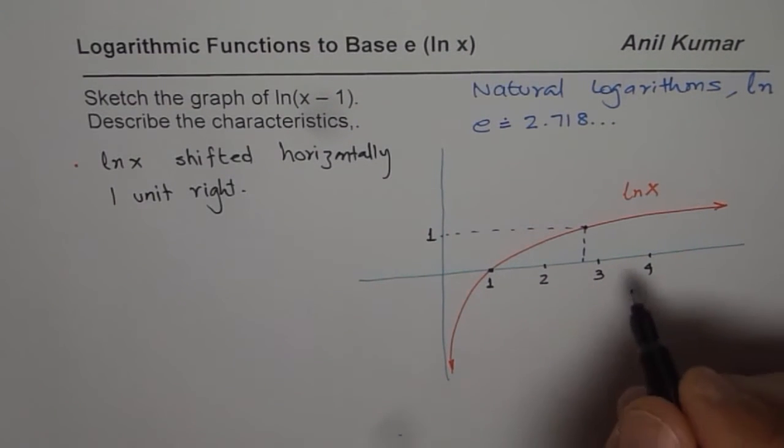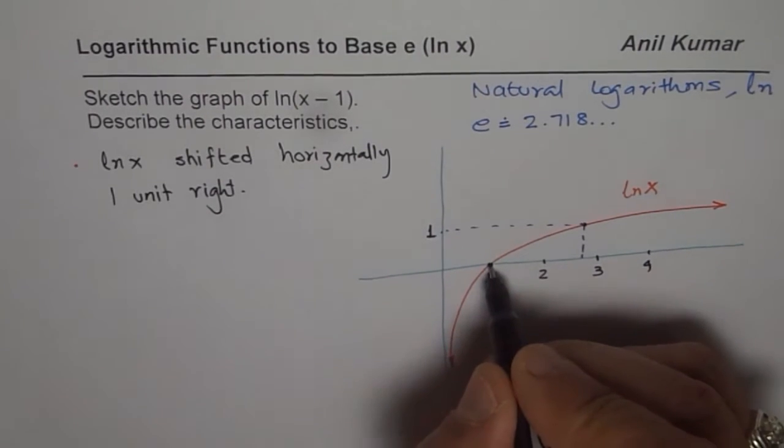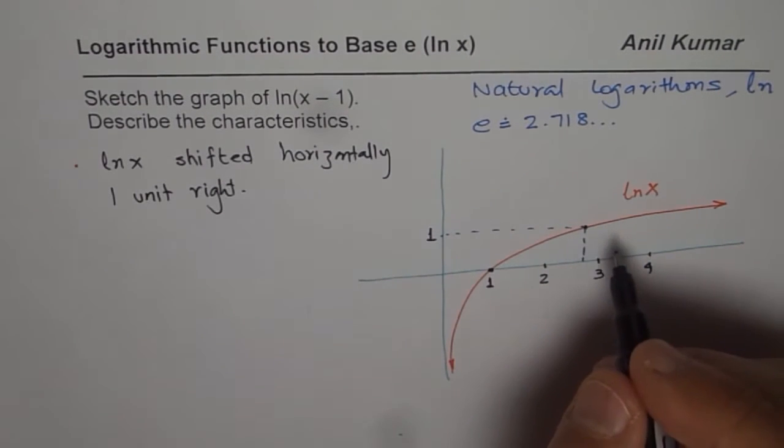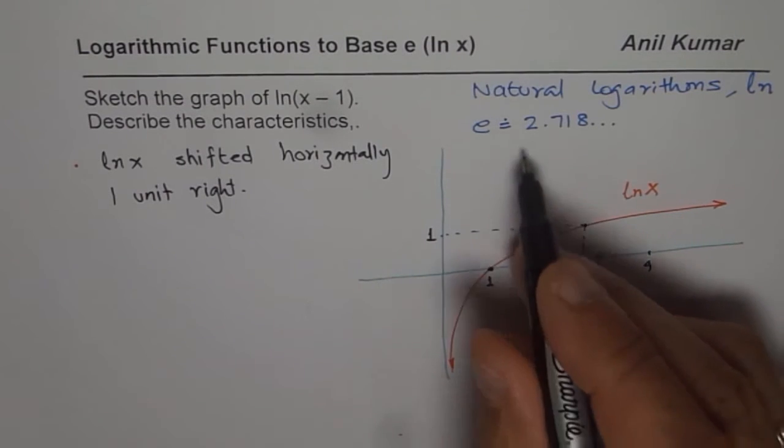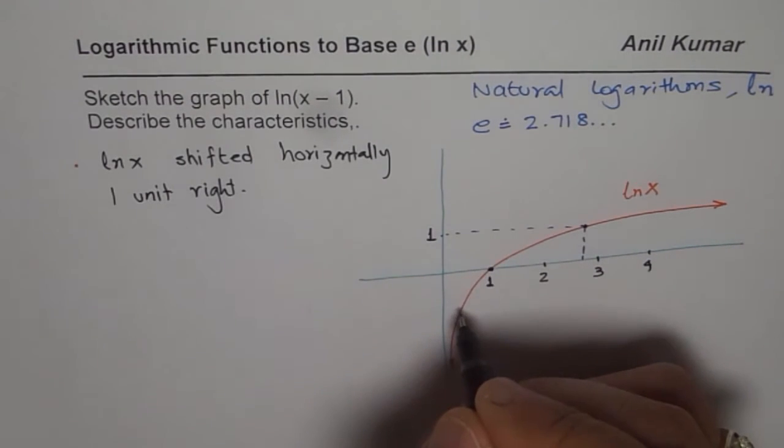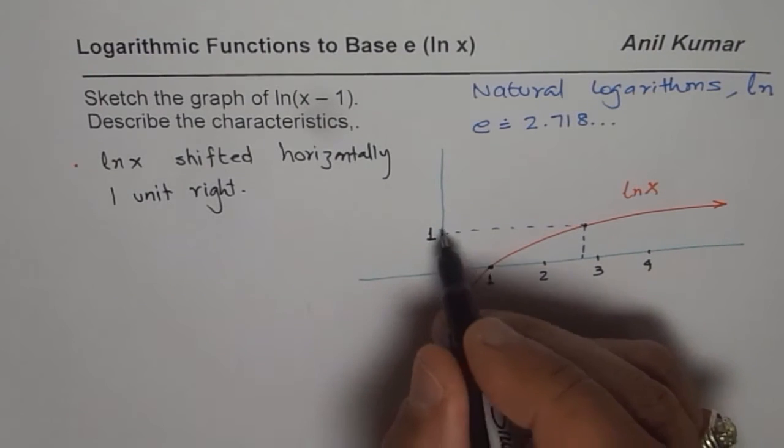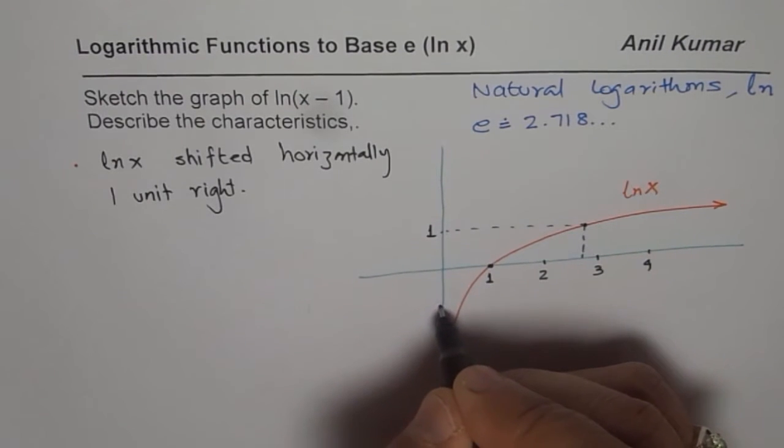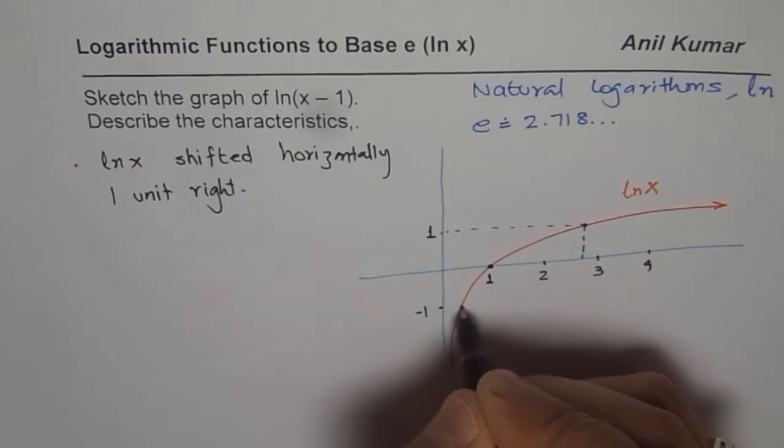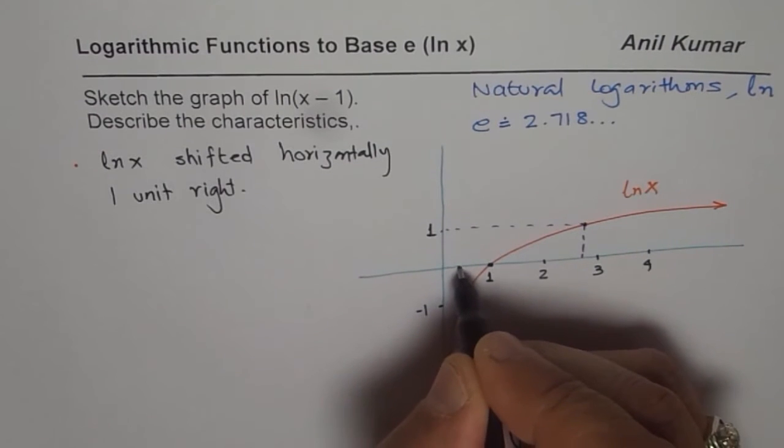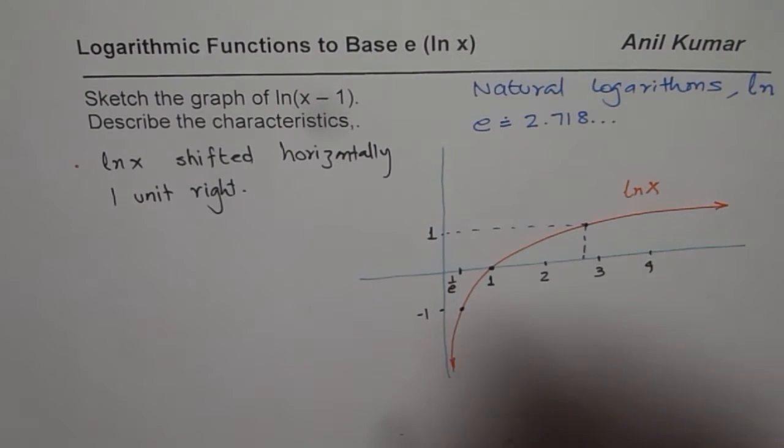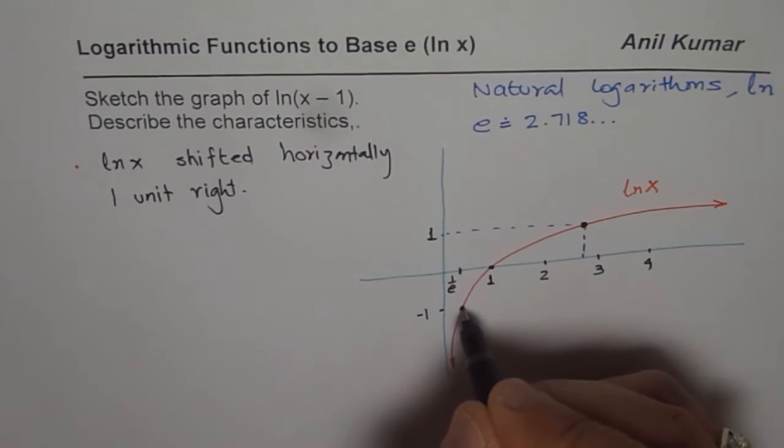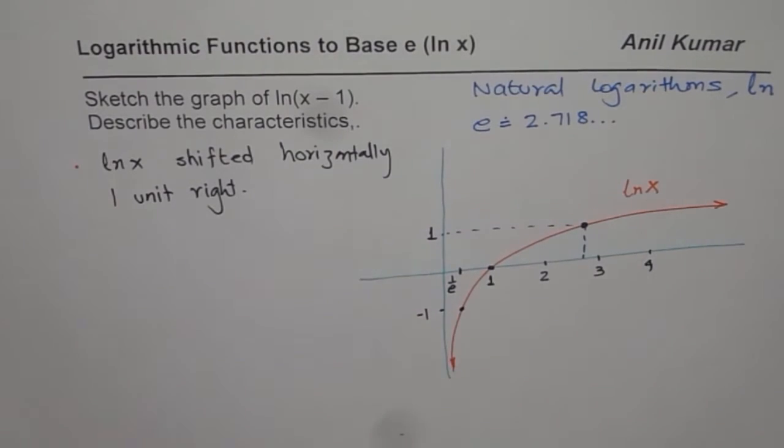That is one critical point for this function and the other critical point could be 1 over e. If I have 1 over e, then I'll get minus 1 as my value. So let's say this is minus 1 and this point on the x-axis represents 1 over e for me.